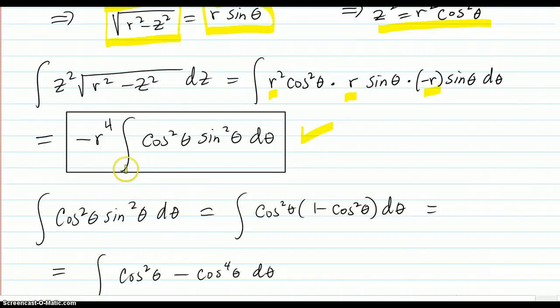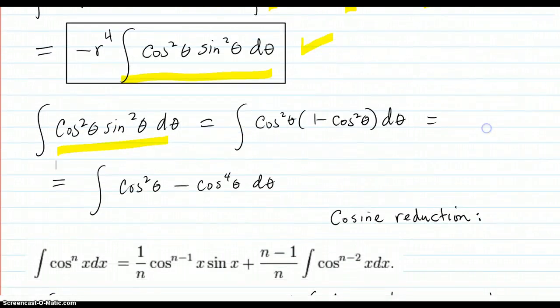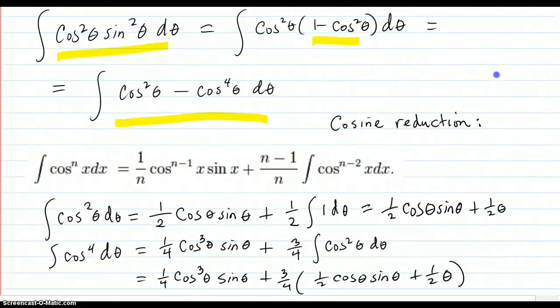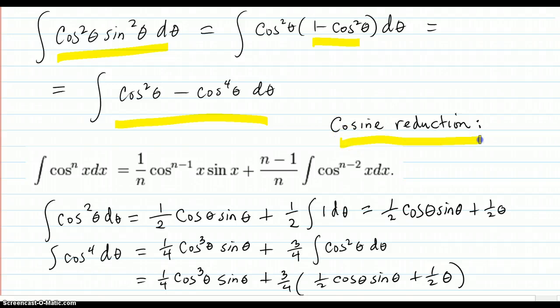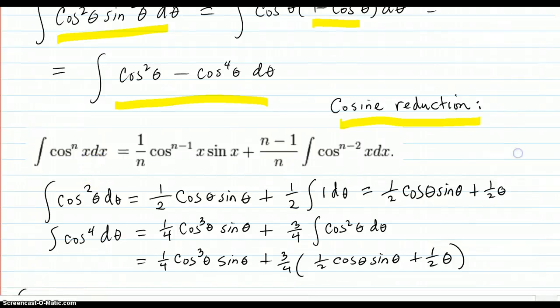So now all you have to do is work with this one. So what I did was, I just said, let's put the negative r to the fourth aside for a second. Just work on this. So here, and I chose to do sine squared is 1 minus cosine squared. And you come up with this. And then you have your cosine reduction formula in your table of integrals. Cosine n power equals this. So for the squared, n is 2.